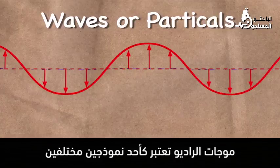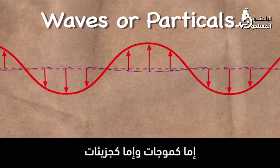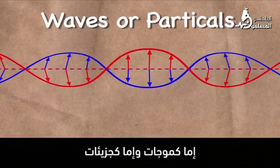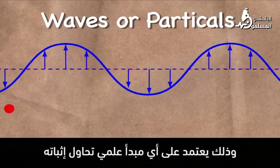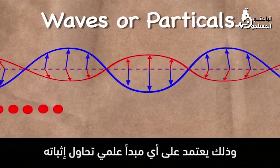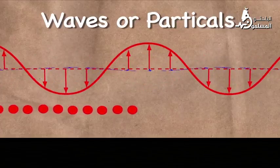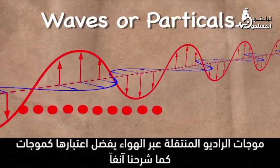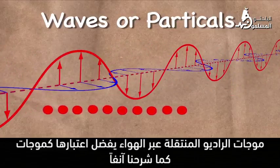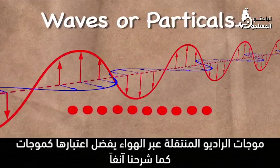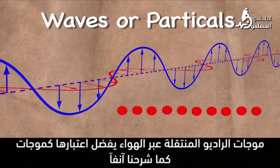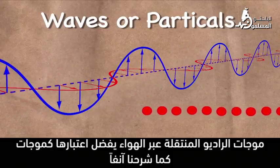Radio waves are thought of in one of two different forms, either as waves or as particles. Which one depends on what scientific principle you're trying to prove. Radio waves propagating through air are best thought of in terms of waves, as we have been discussing here.